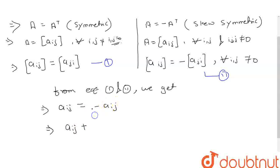So, A of ij plus, we shift this element from right-hand side to left-hand side, plus A of ij equals 0, which means 2 A ij, the elements of A matrix, equals 0.